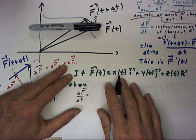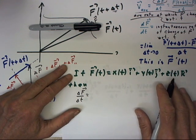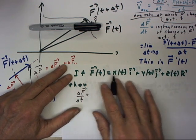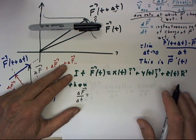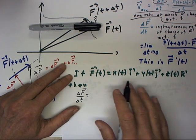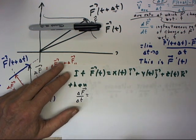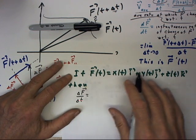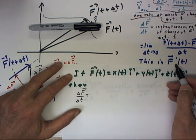If f of t equals x of t i plus y of t j plus z of t k, which is of course the general form of a vector function of three variables in three dimensional space, then let's ask ourselves what is the meaning of f prime of t?